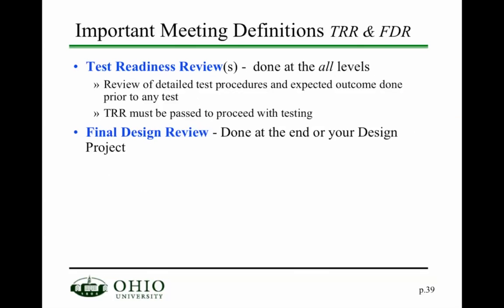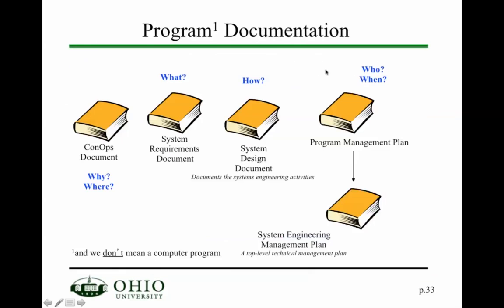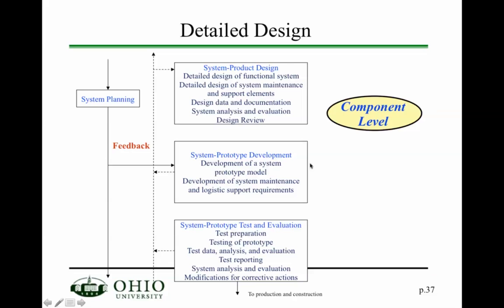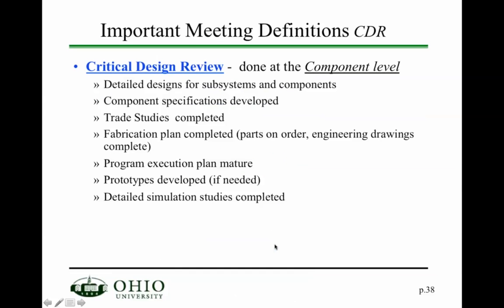As part of the detailed design, you end again with a review stage — the critical design review. Detailed designs must be completed for the subsystems and components, components must be specified, all trade studies completed and the right components selected. You also need to come up with a fabrication plan, because the next step is to take your system and produce and fabricate it, typically with prototypes already developed and tested in a relevant environment.